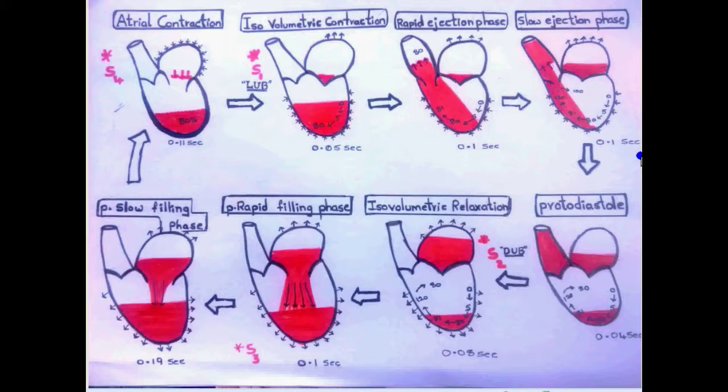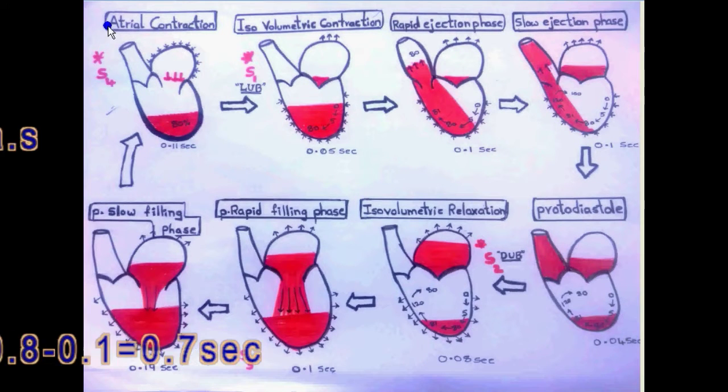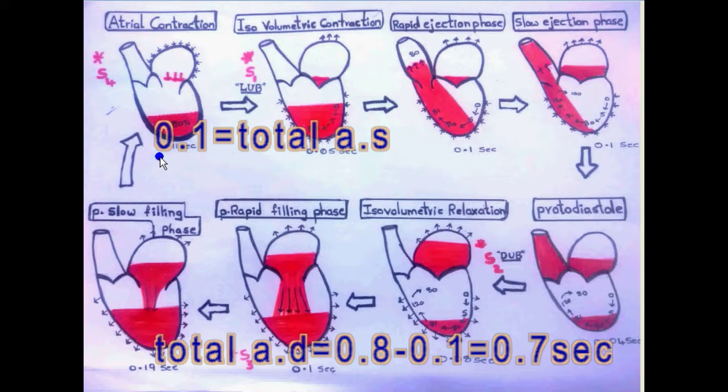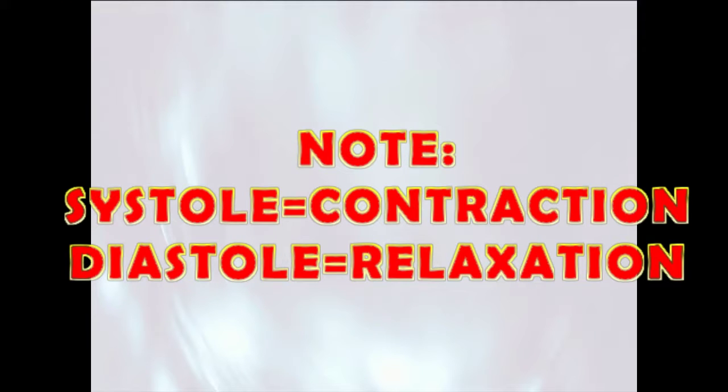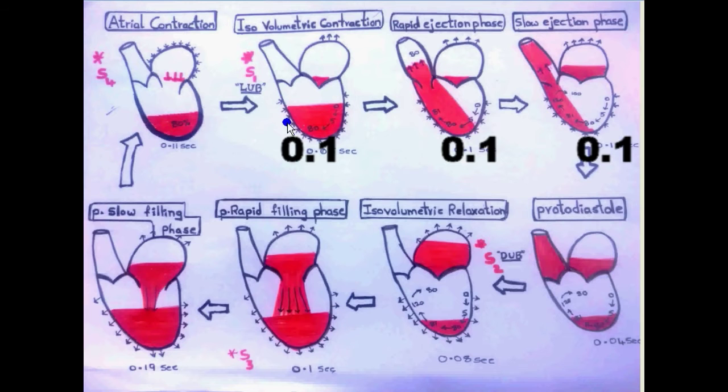The time taken for atrial contraction is 0.1 seconds, as the atria contract only in this stage. Then the time taken for total atrial diastole is 0.8 - that is total cardiac cycle - minus 0.1, which gives us 0.7 seconds.